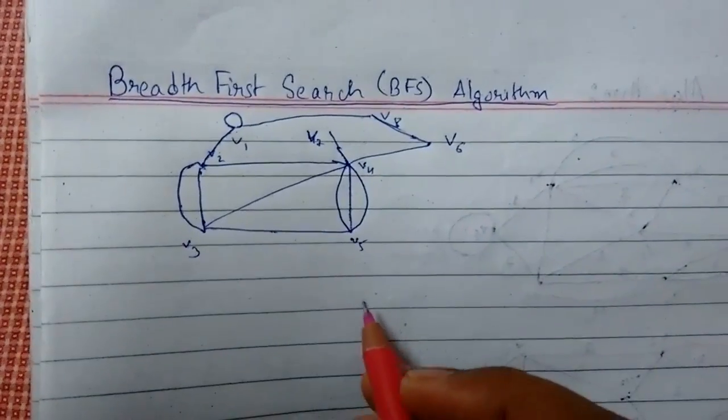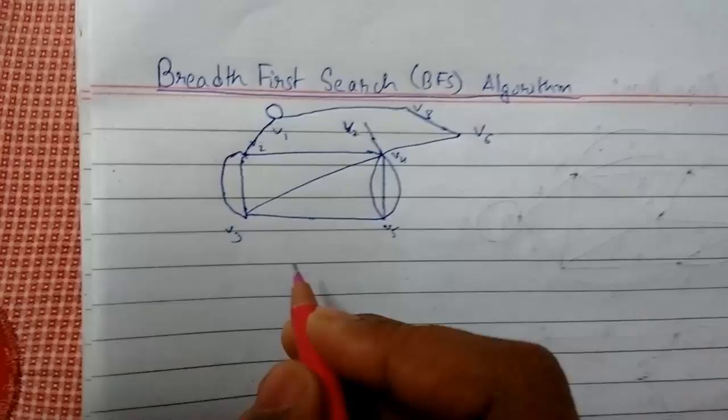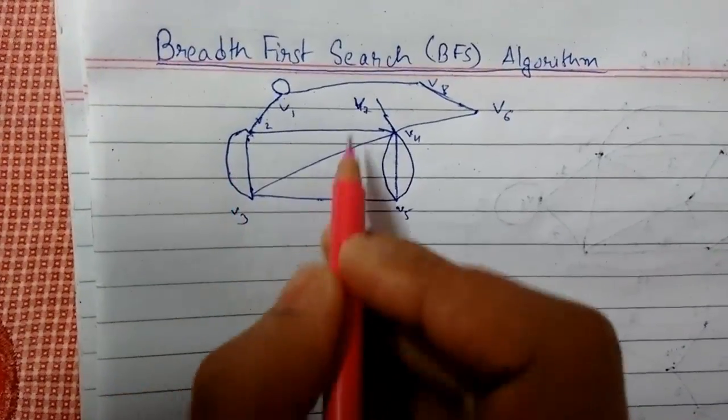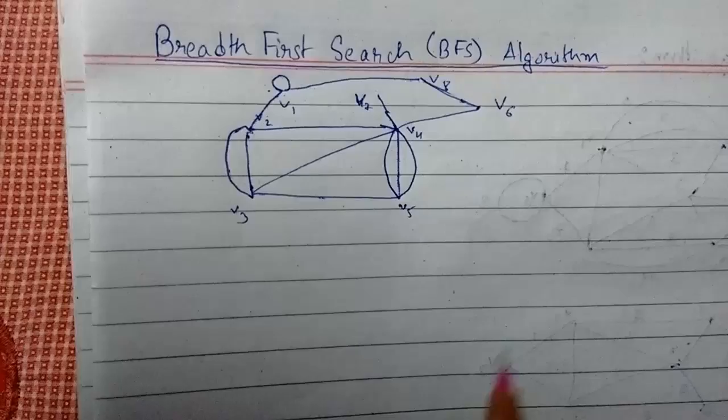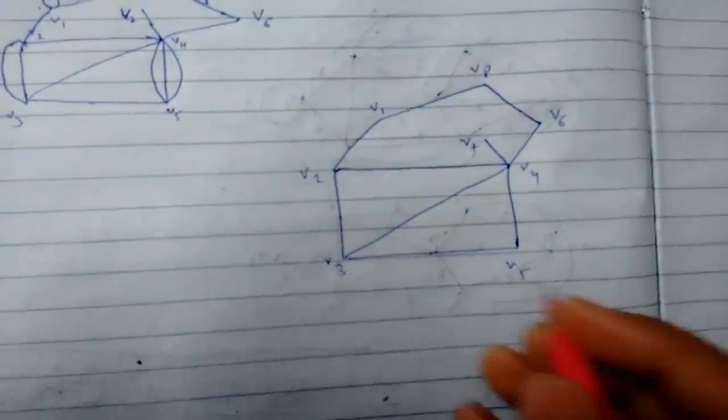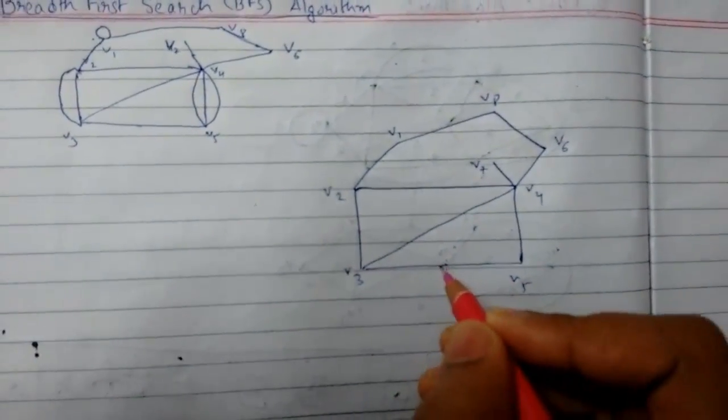Let me first draw the graph. So this is our graph. First, to continue this, we need to remove the self loops and the parallel edges. After removing the self loops and the parallel edges, our graph looks like this.